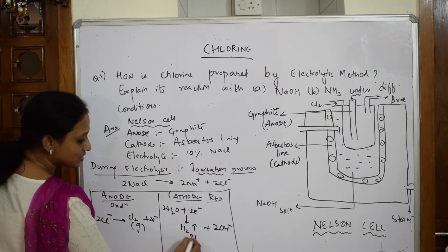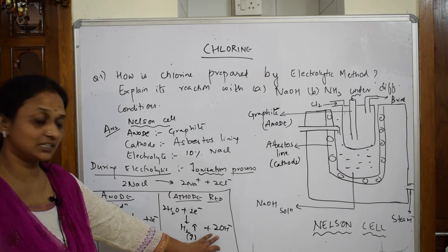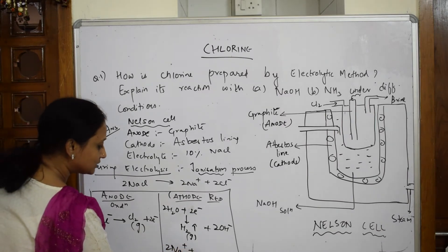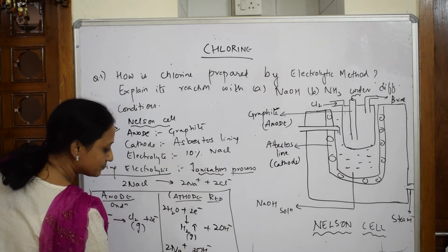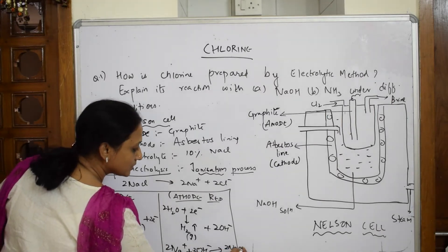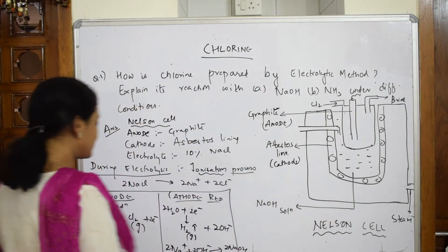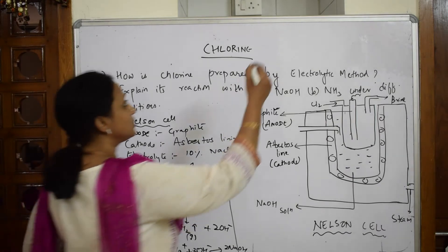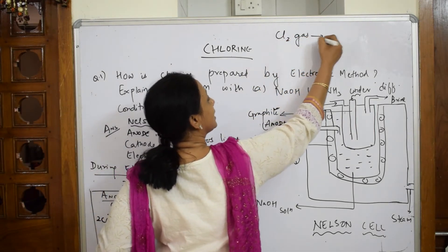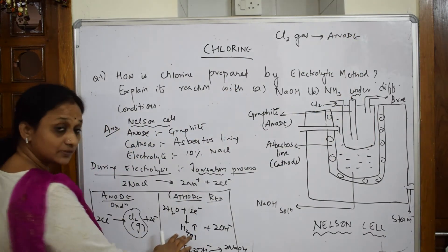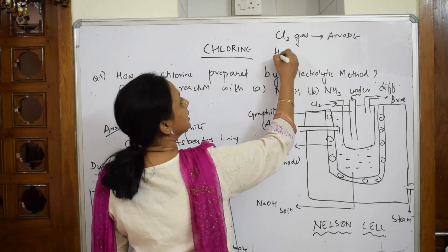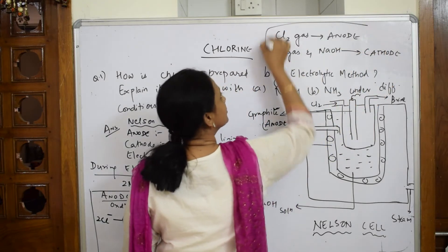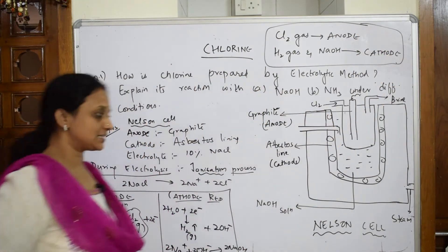The remaining Na⁺ ions react with the OH⁻ ions: 2Na⁺ + 2OH⁻ → 2NaOH. The NaOH solution is collected. So the final products are: chlorine gas liberated at the anode (which is what we are trying to prepare), and at the cathode we get hydrogen gas as well as sodium hydroxide (NaOH). This is how chlorine is prepared in the Nelson cell.